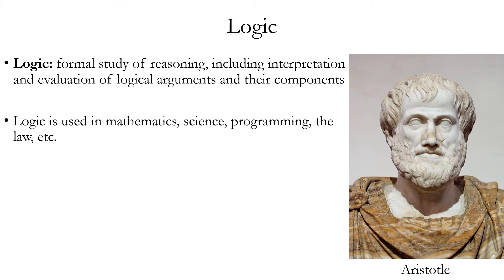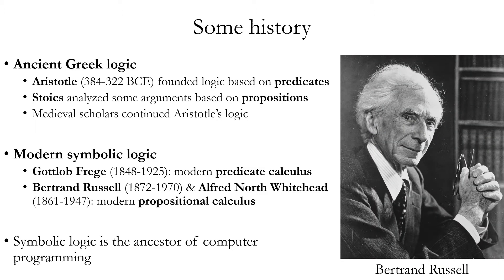Ancient Greek logic was started by the ancient Greek philosopher Aristotle in the 4th century BC. Ancient Greek logic is regarded as having been founded by Aristotle, who classified arguments as valid or invalid based on their logical form. His analysis is based on what we would nowadays call predicate logic or predicate calculus — looking at arguments defined by their form in terms of a pattern of predicates. A predicate is basically a class or set of things referred to by a name. For example, the proposition 'all humans are animals' contains two predicates — humans and animals — and a logical operator word, 'all.'